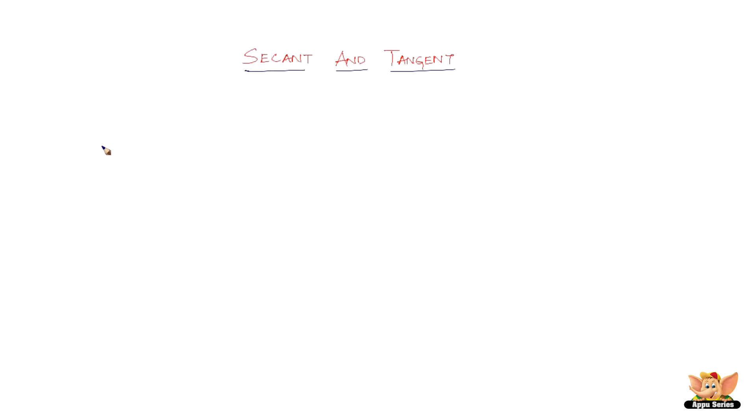Let us first look into the term secant. It is nothing but a line which intersects a circle in two distinct points. Say we've got a circle here and then say there is a line.